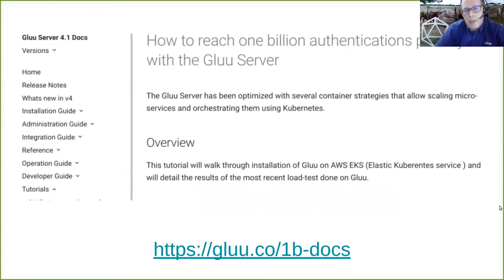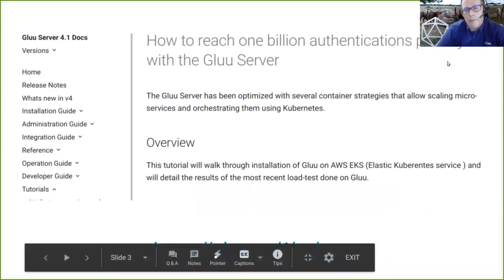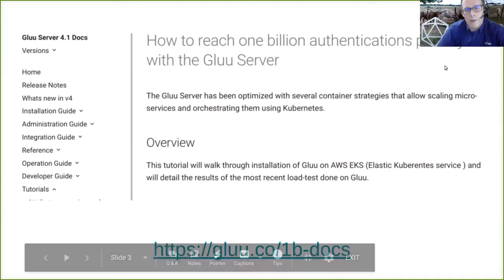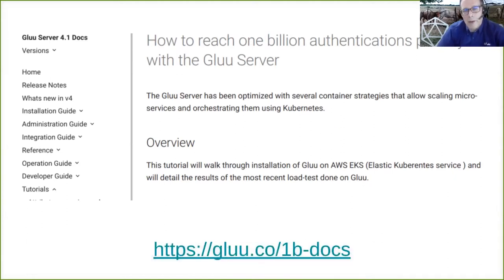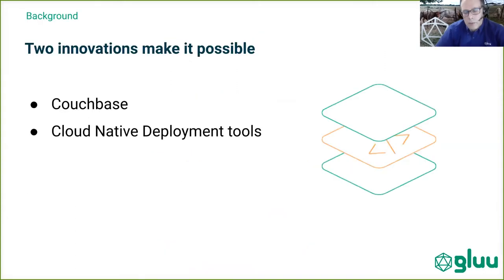How we did this benchmark is documented in our docs at glue.co/1b-docs. What really made this possible were two innovations. The first innovation is Couchbase — we needed a better persistence mechanism than LDAP, something that was horizontally scalable. The second innovation was cloud-native tools, especially containers and Kubernetes.